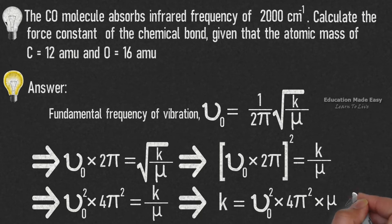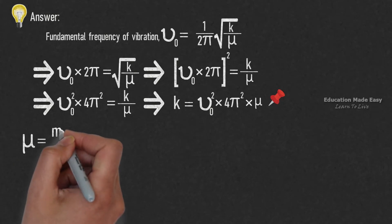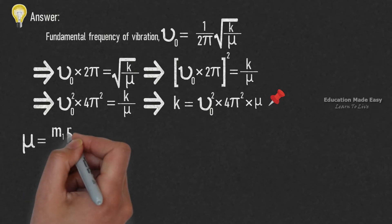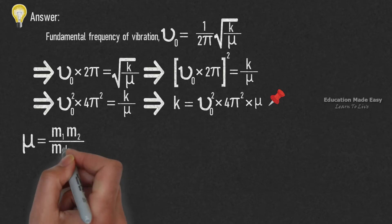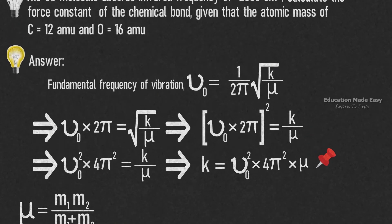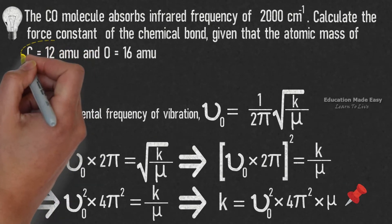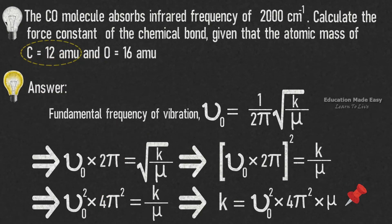Let us pin this equation, which we will use later. Now let us find μ. μ = (m₁ × m₂) / (m₁ + m₂). From the question, m₁ = C = 12 amu and m₂ = O = 16 amu.